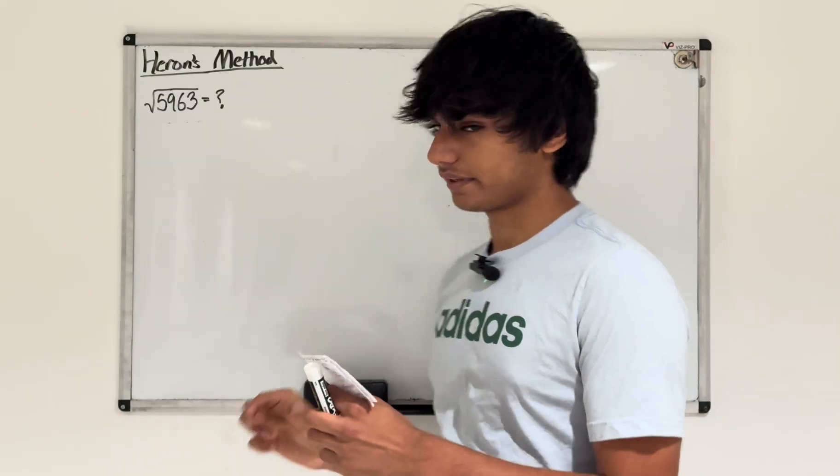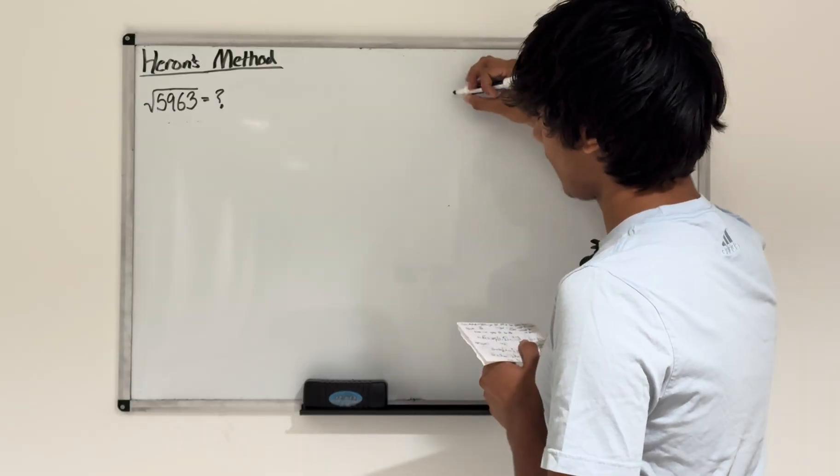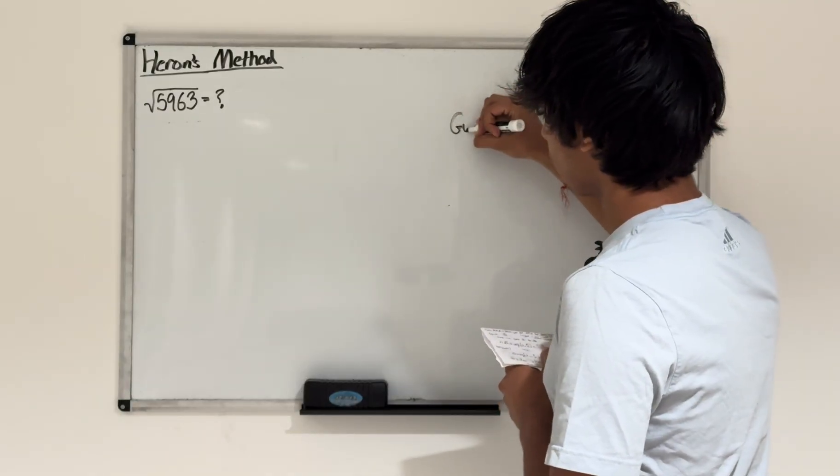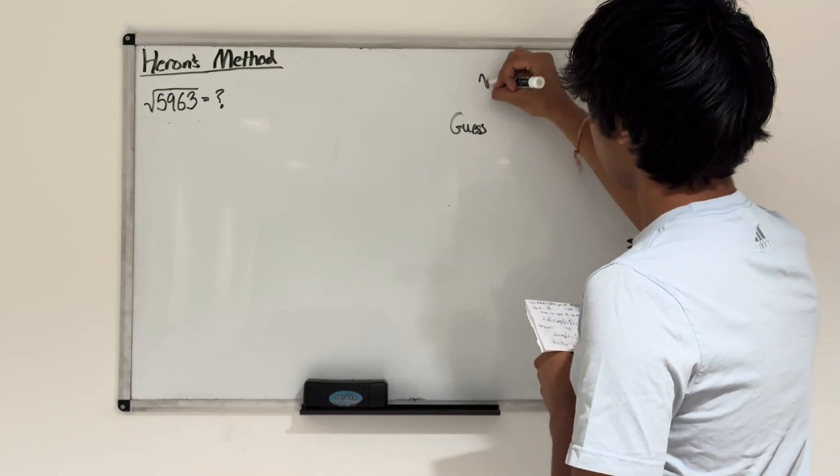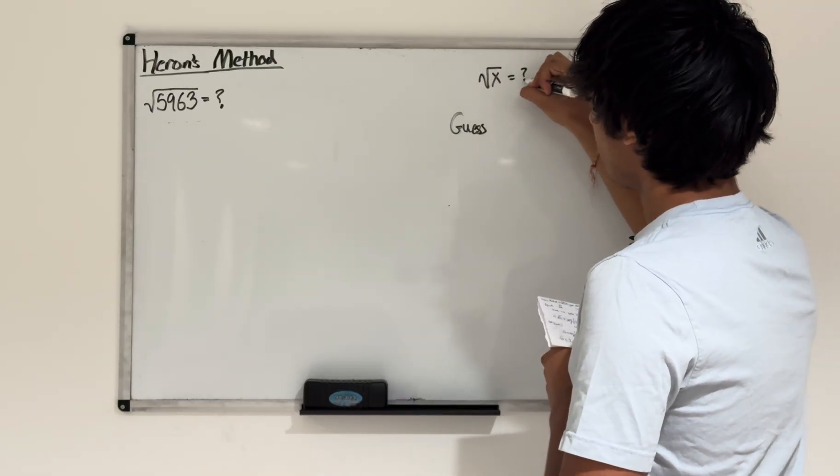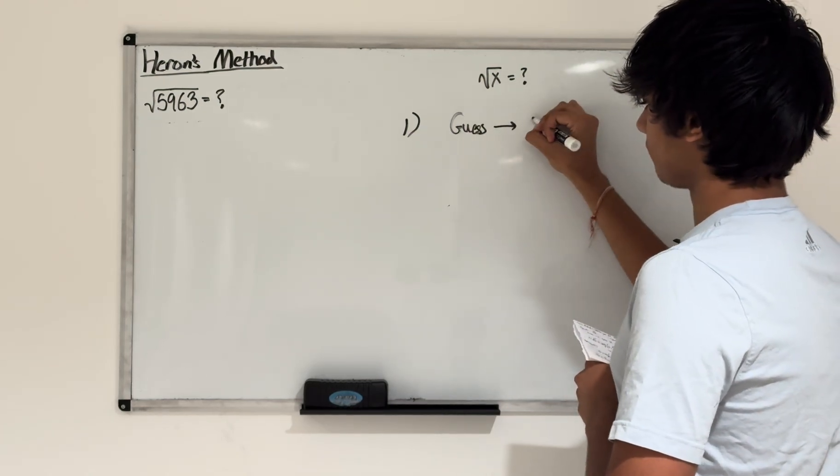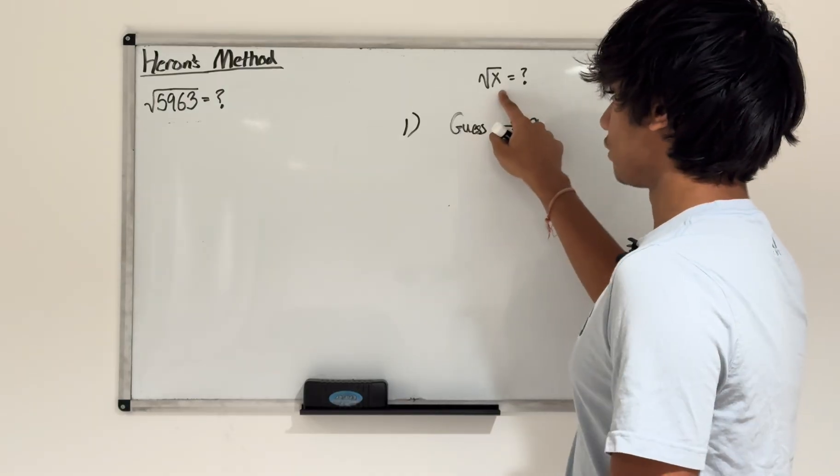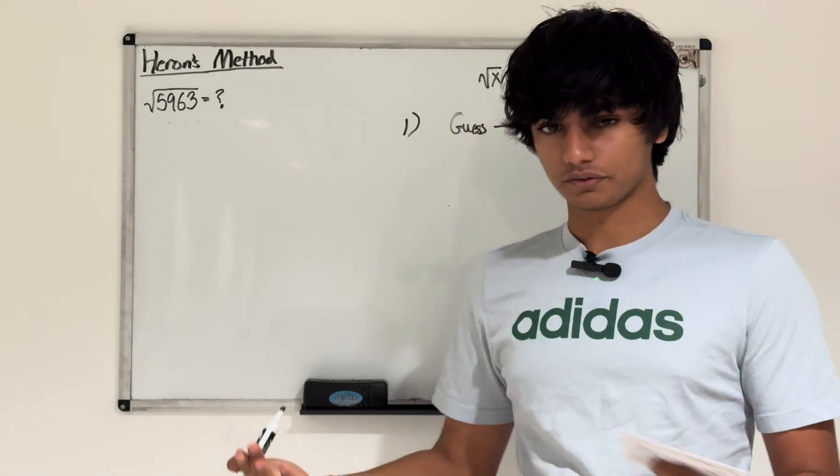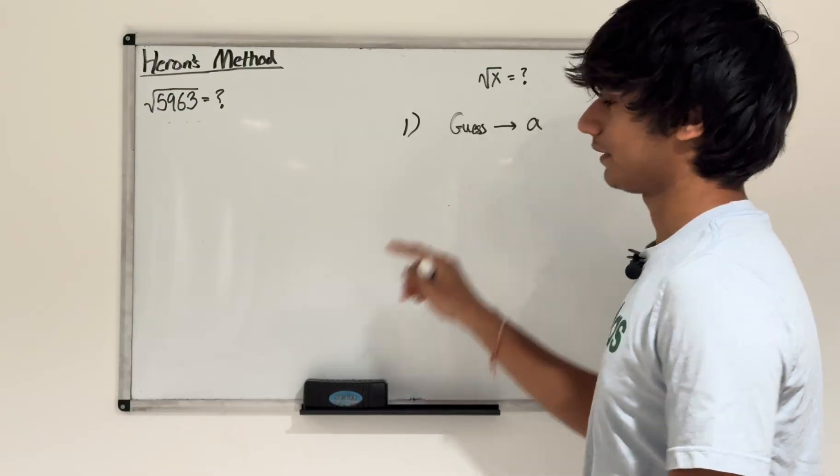So let me start with explaining what the method is. The method starts with finding a guess for your value. Let's say we have a question square root of x and we want to find the value of that. Our first step using Heron's method is to make a guess and we set that guess equal to a. This guess should be a number that you think is really close to the value of square root of x. The closer it is the better, but obviously you just want to find a close number that's not the exact.